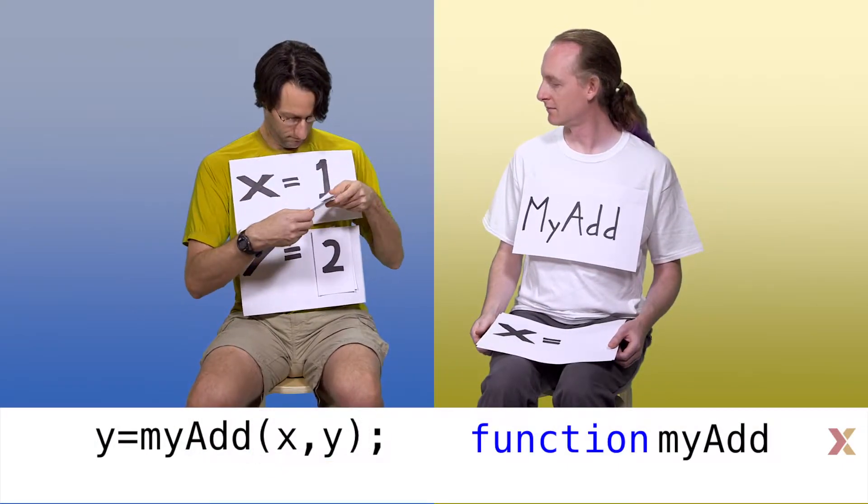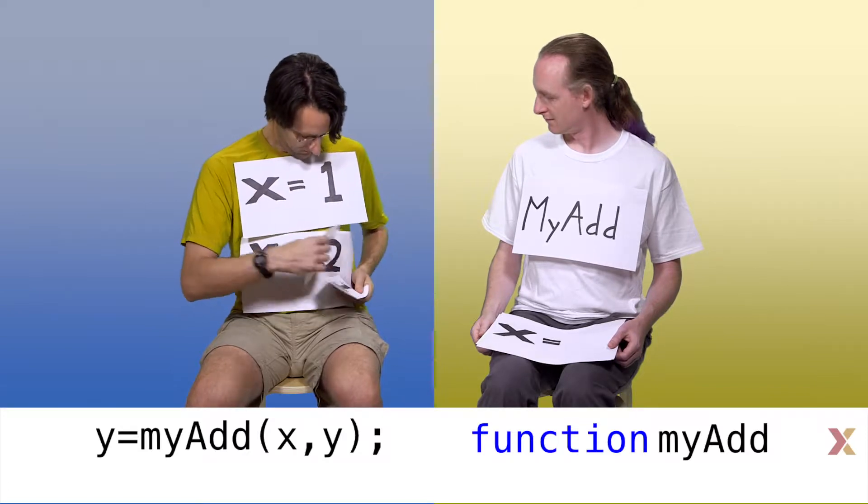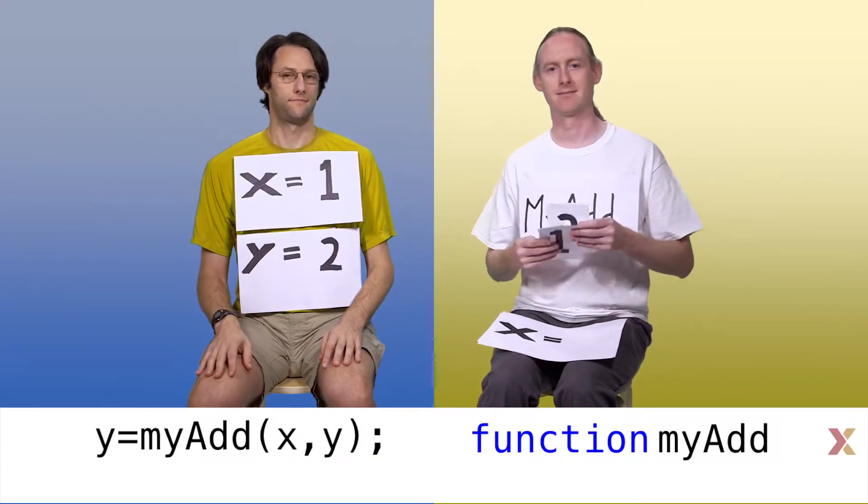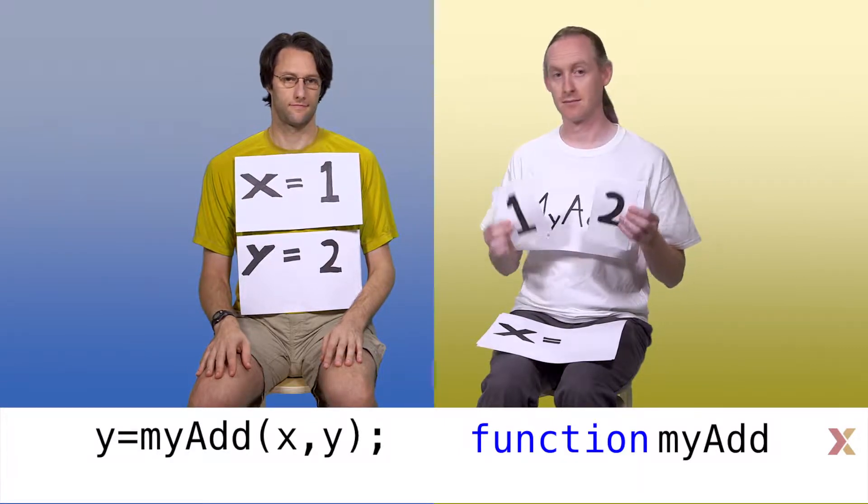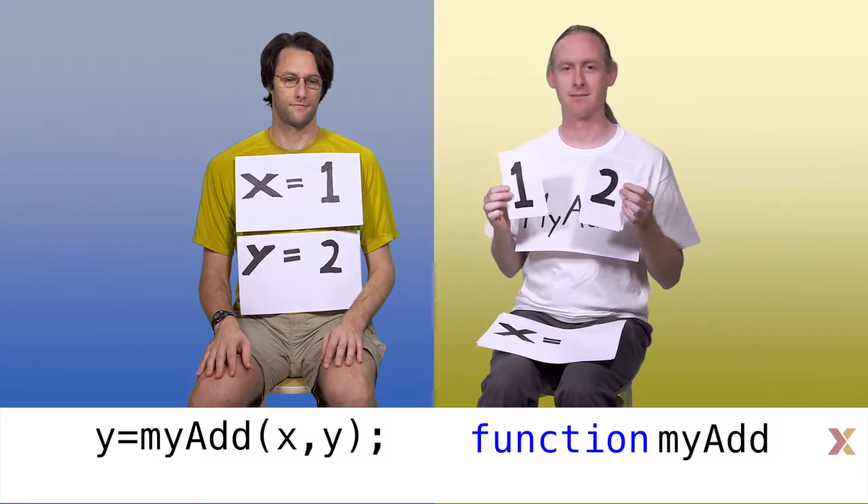Notice, the script is not handing the variables x and y to myAdd. It just passes the values that were stored in x and y. MyAdd now does something with those numbers. The script has no idea what the function is actually doing with the number.